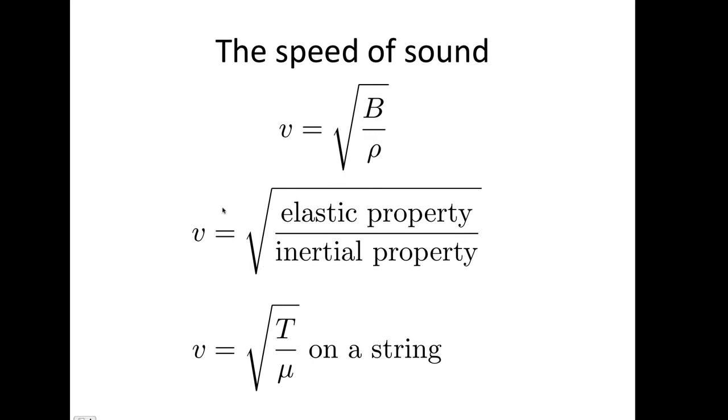In general, we've got that the velocity of sound in a medium is equal to the elastic property of the medium, in this case the bulk modulus, in this case the tension, over the inertial property, which in this case is the density, and in this case it's the linear density.